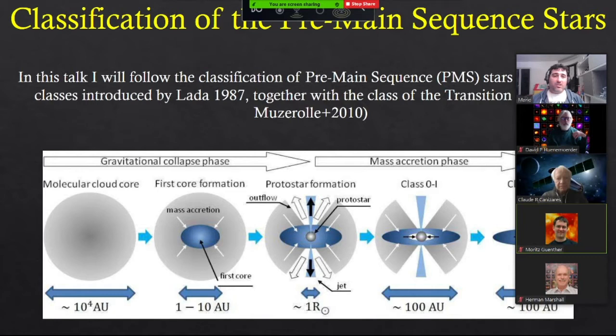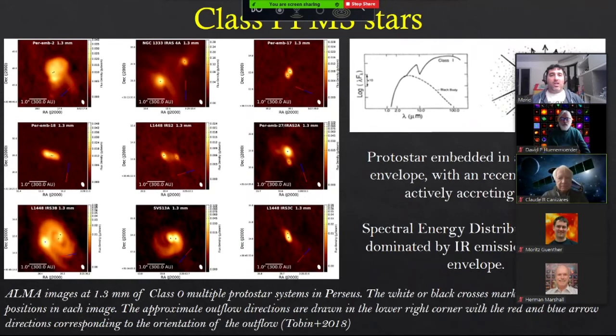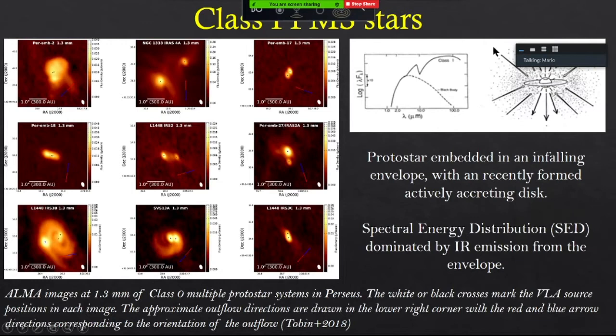To set the ground, I will use the classification of pre-main sequence stars introduced by Lada and collaborators in 1987, who classified these newborn, very young stars into three different classes: Class 1, Class 2, and Class 3. The Class 1 objects are the youngest, which are still embedded in the envelope still accreting onto the central star.